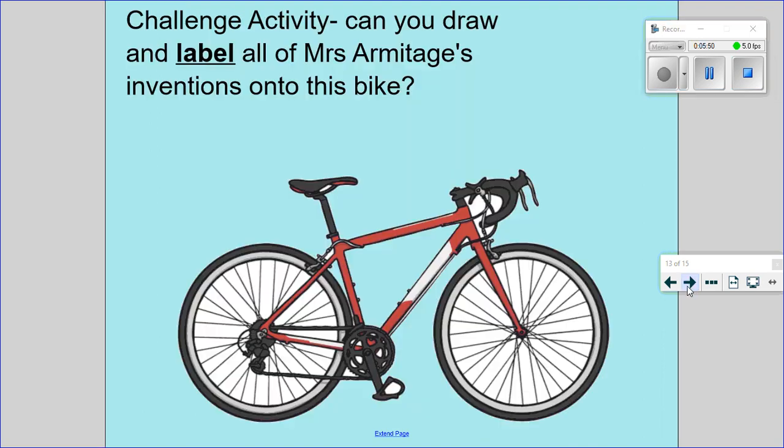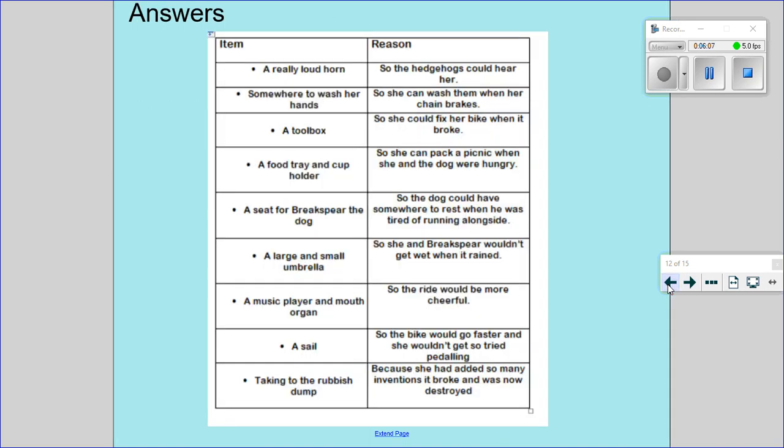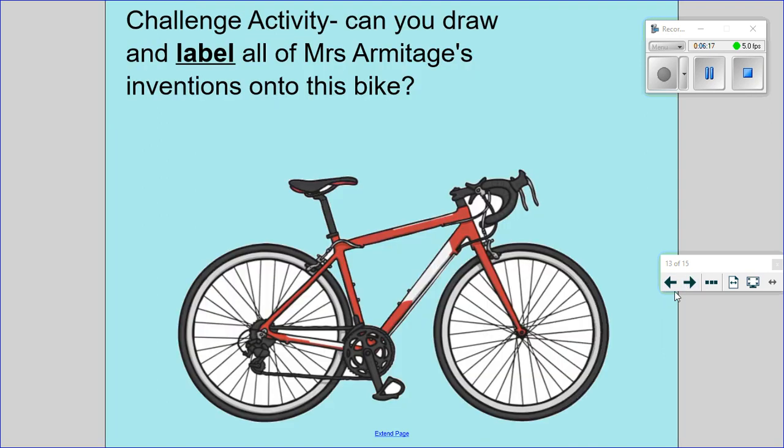And finally, your task for today is you have a challenge activity. Can you draw and label all of Mrs. Armitage's inventions onto this bike? Now if you haven't got a printer, you don't need to print the bicycle out. What you can do is draw your own bicycle. And then have a little look at all those things there that you've just worked out. Can you draw them onto the bicycle? A little bit of fun there. And can you label them as well?